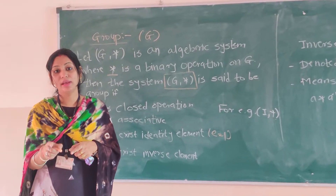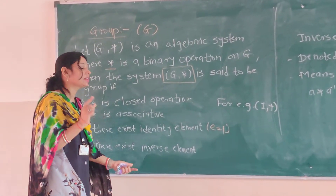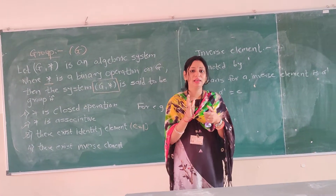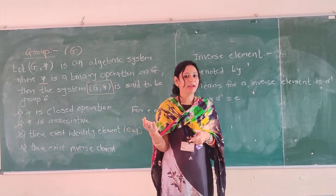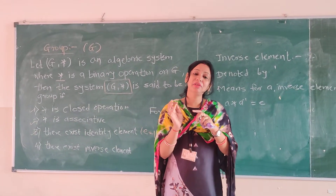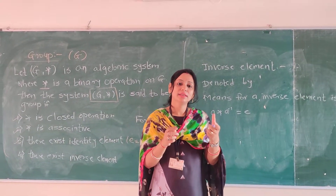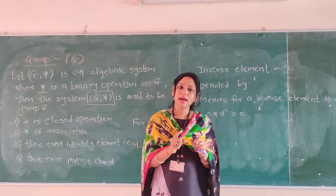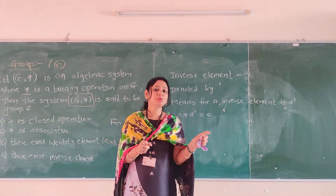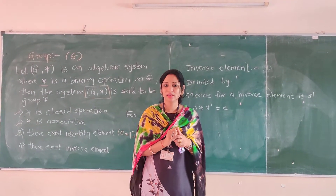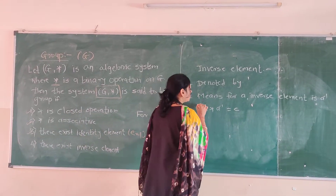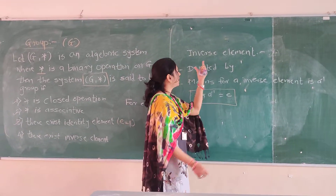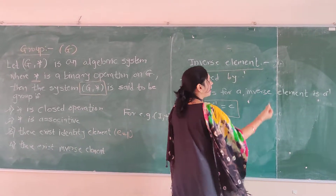One more property is added when talking about group — that is, there exists an inverse element. What is an inverse element? Suppose we have element A; then the inverse element of A is A′, which we have already seen with sets. When we multiply A with A′, we should get the identity element E. That is the inverse element — when you multiply an element by its inverse, you get the identity element E, and it is denoted by A′.